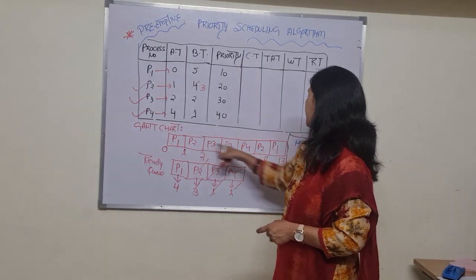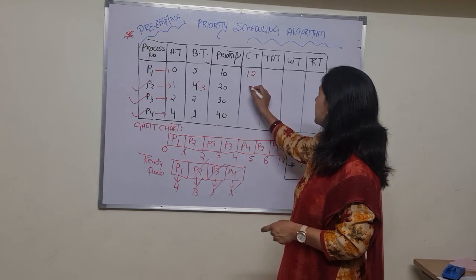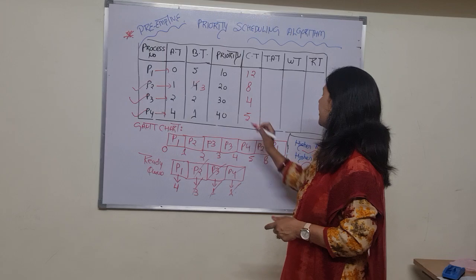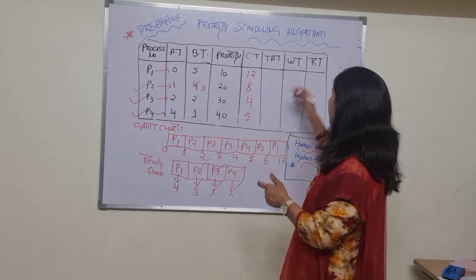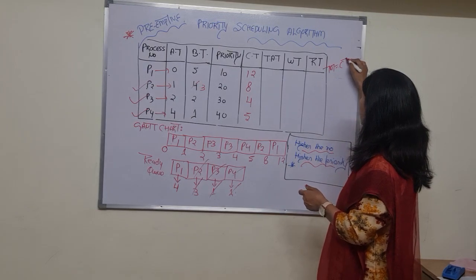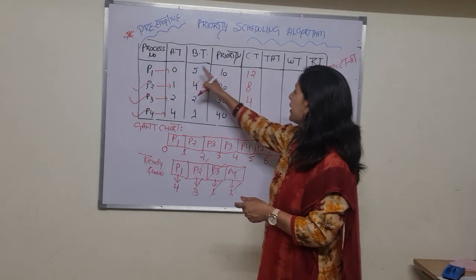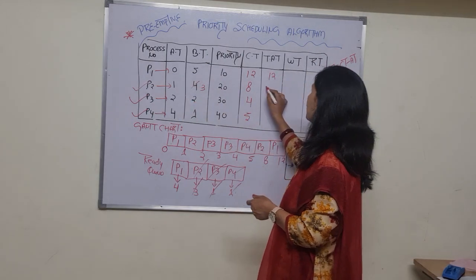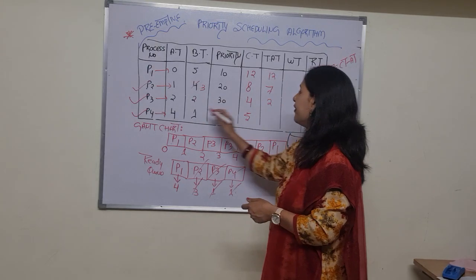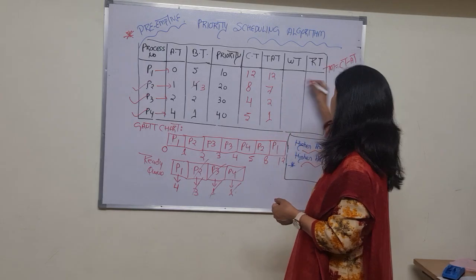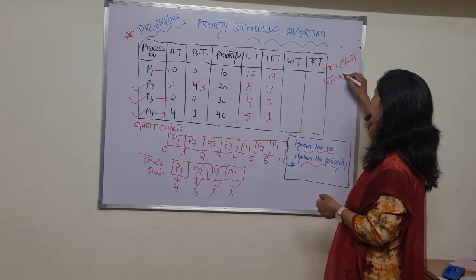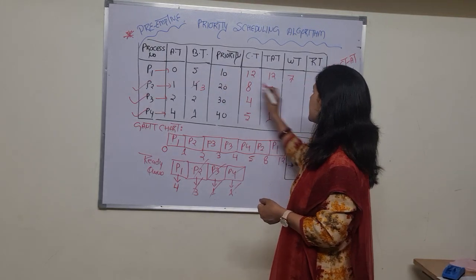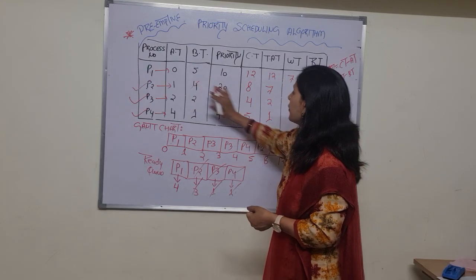The completion times are: P1 completes at 12, P2 at 8, P3 at 4, P4 at 5. The turnaround time formula is: completion time minus arrival time. So: P1 = 12 - 0 = 12, P2 = 8 - 1 = 7, P3 = 4 - 2 = 2, P4 = 5 - 4 = 1.